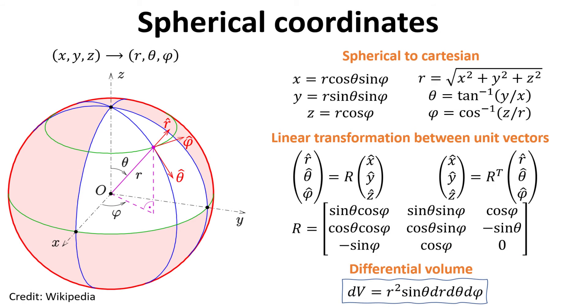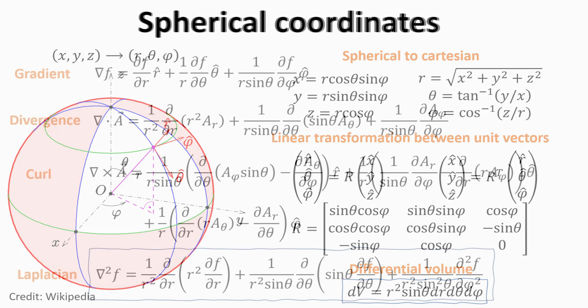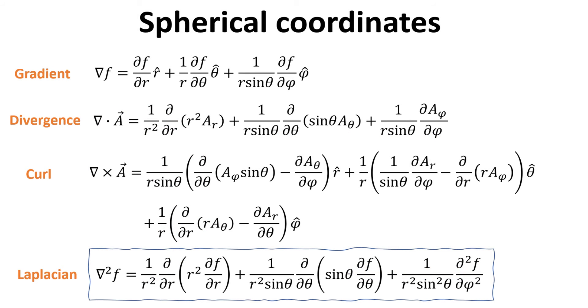Lastly, we would also need the volume element in spherical coordinates in our discussion. The vector differential operator del in this spherical coordinate system leads to the following expressions for the gradient, divergence, curl and Laplacian as shown. Since the Schrödinger equation contains the Laplacian, we would need this for our discussion.